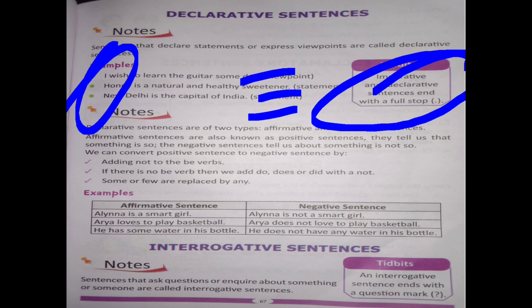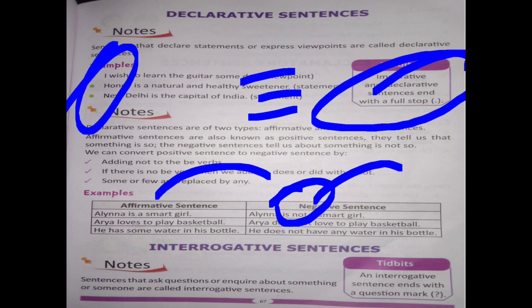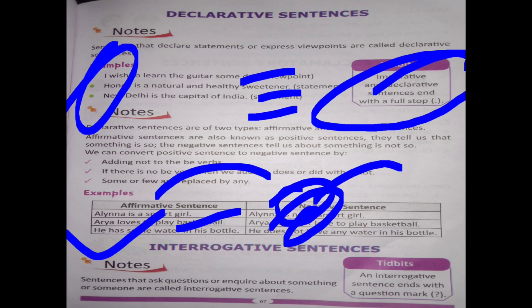Declarative sentences are of two types: affirmative and negative. Affirmative sentences mein 'not' ka bodh nahi hota, jaise 'Allina is a smart girl' or 'Ira loves to play basketball.' Negative sentences mein 'not' lagaa hota hai, jaise 'Ira does not love to play basketball' or 'He does not have any water in his bottle.'